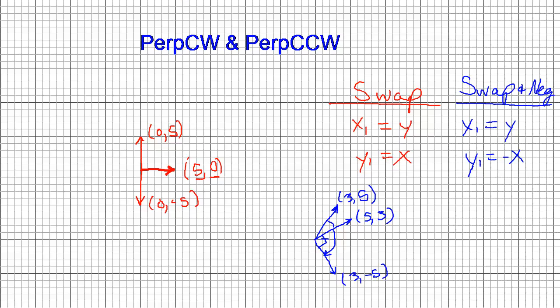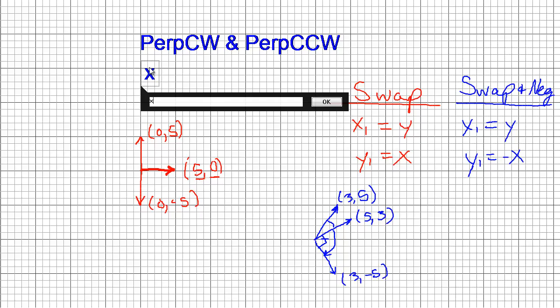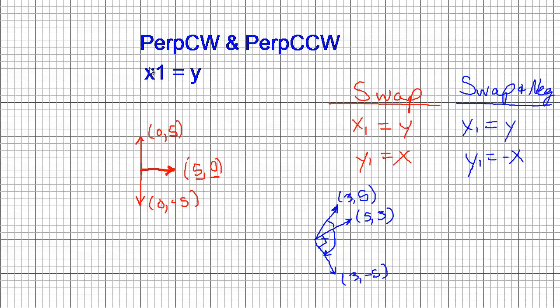So let's put that rule down for perp CW, which means perp clockwise. We'll say that our new x equals the old y, and our new y equals negative the old x. So we've got one of them figured out.